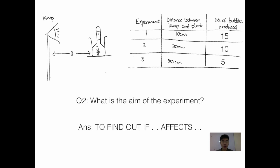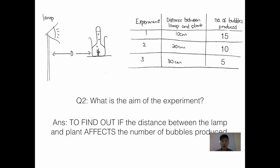Now, I'd like you to take a look at the second question: What is the aim of the experiment? The template answer to this is to find out if something affects something. Using back the two variables, most students would say: to find out if the distance between the lamp and the plant affects the number of bubbles produced.